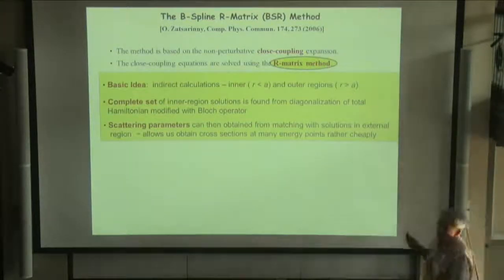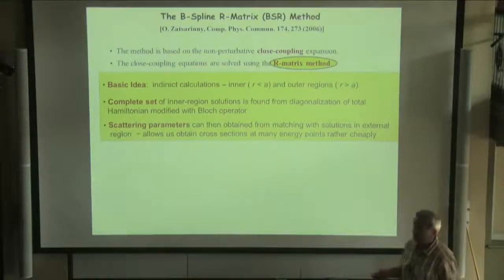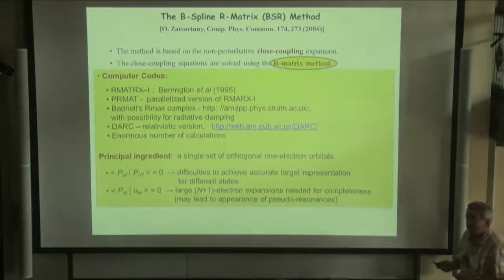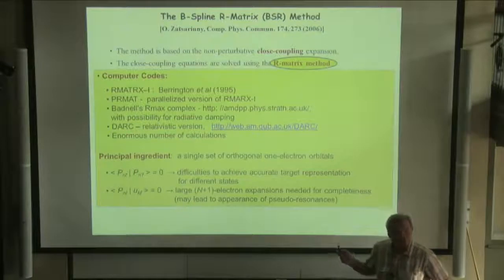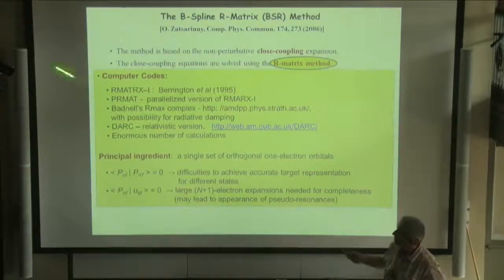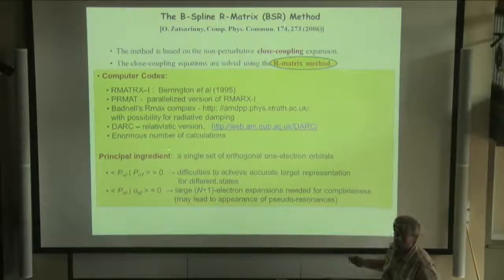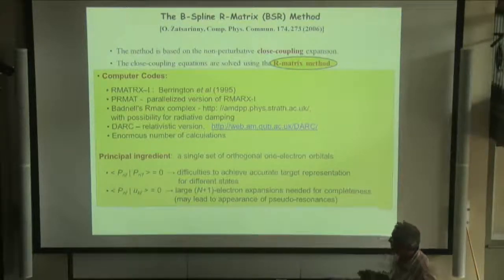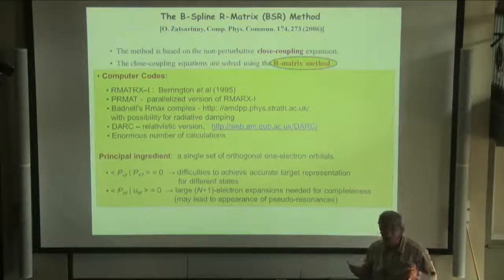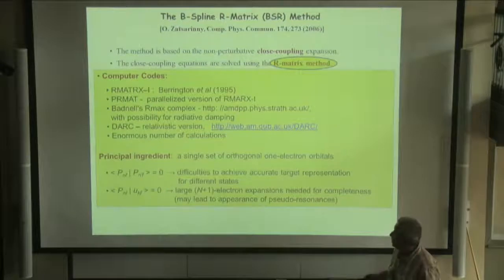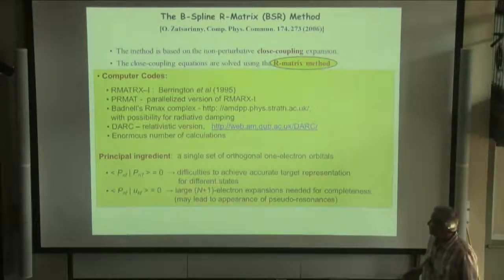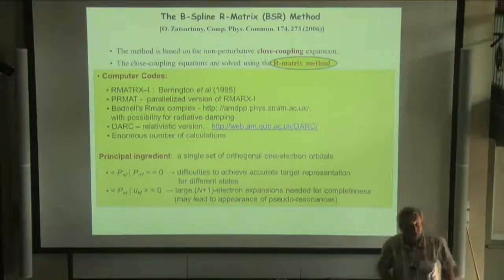The most popular method for solving close-coupling expansion is R-matrix method. I won't stay on the details. I just say that based on this method, there are already many general computer codes, including for the relativistic equation, in very extensive use for a number of calculations. But these codes have a few limitations. For example, principal ingredients were used: a single R-matrix set of orbitals to describe bound and continuum states. This limitation leads to difficulty to achieve accurate target representation and appearance of pseudo-states.